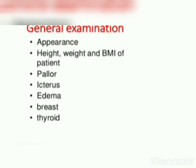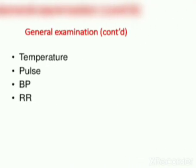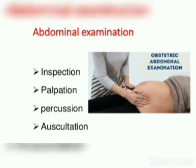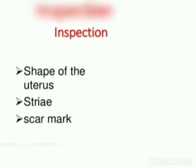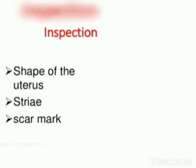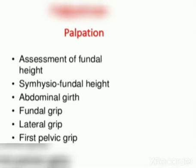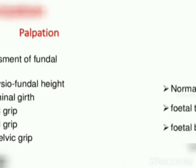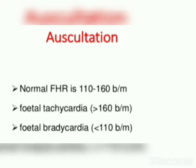General examination includes temperature, pulse, and respiratory rate. Abdominal examination involves inspection — checking the uterus and striae — palpation including fundal height, symphysio-fundal height, abdominal girth, fundal grip, and lateral grip. Auscultation checks the fetal heart rate: normal is 110 to 160 beats per minute; fetal tachycardia is greater than 160, and fetal bradycardia is less than 110 beats per minute.